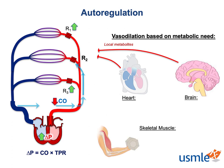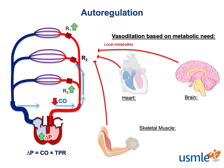Skeletal muscle also knows this trick to some extent. It's not a vital organ, but during strenuous activity it requires a humongous blood supply — up to a whopping 80% of the cardiac output. So it's also able to increase its blood supply based on metabolic need. But since it's not a vital organ, it's only able to do this during exercise. At rest, the body's actually pretty aggressive about limiting its blood supply in the form of high sympathetic vascular tone, since, if left unchecked, the skeletal muscle could potentially divert way too much blood away from the rest of the body.